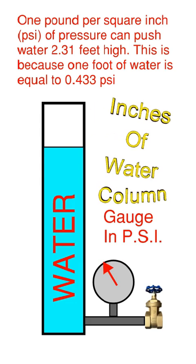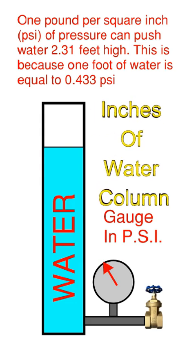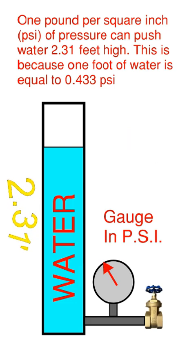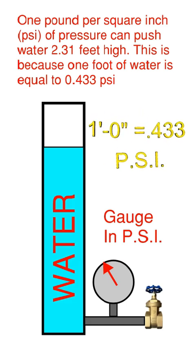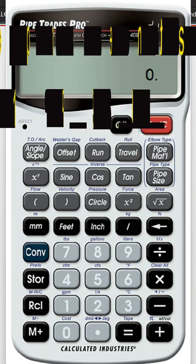Before we get into that, we need to understand that one pound per square inch of pressure can push water 2.31 feet, and that is based on one foot of water equals 0.433 static head pressure.